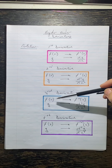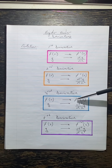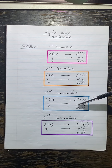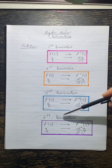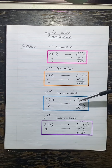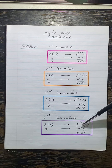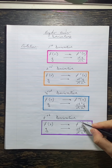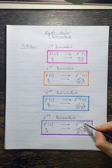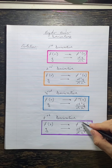For the third derivative, if it's given in the f form we say f triple dashed x; if it's given in the y form we say d cubed y by dx cubed. Then with the fourth derivative and higher, we change things around for the f part — we say f⁽⁴⁾ (in brackets), so that's the fourth derivative. Please note that this is not saying f to the power of 4 — it's in brackets, meaning the fourth derivative. If it's the fifth derivative we put a 5 in there, and so on.